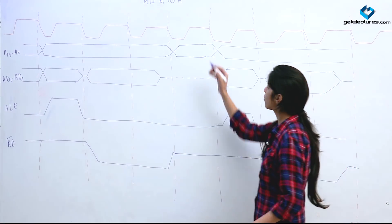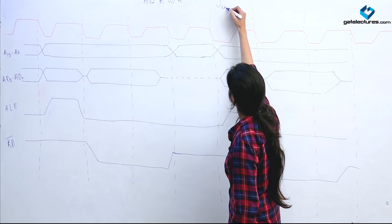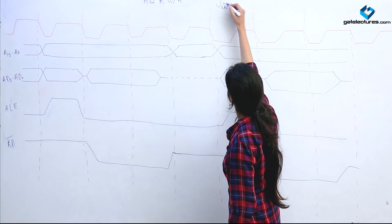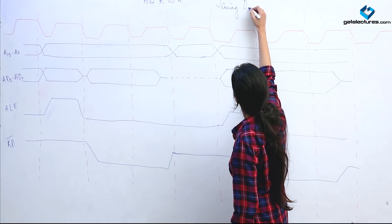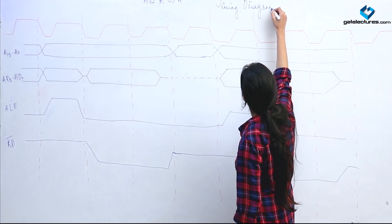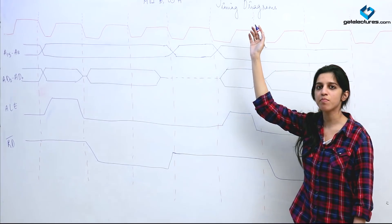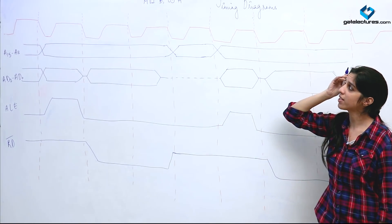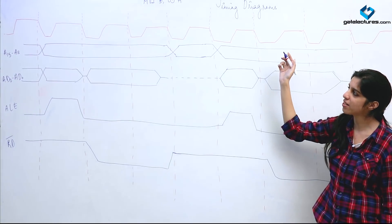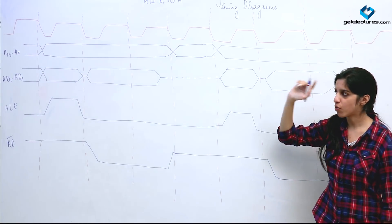Today we are going to look at timing diagrams. Basically, in timing diagrams we are going to see how many clock cycles are going to be consumed for a particular instruction.